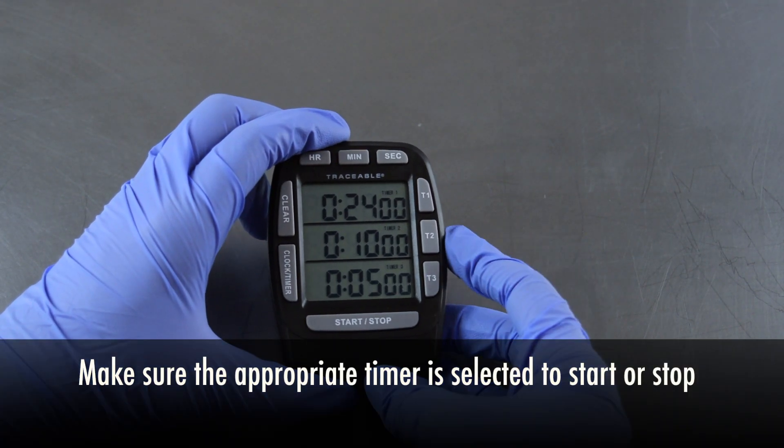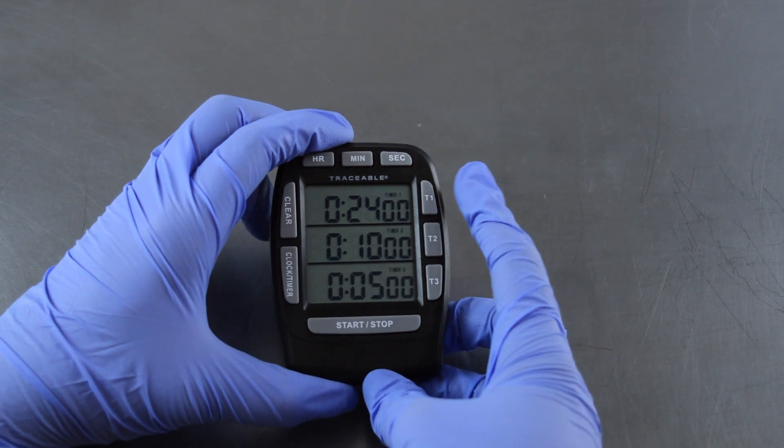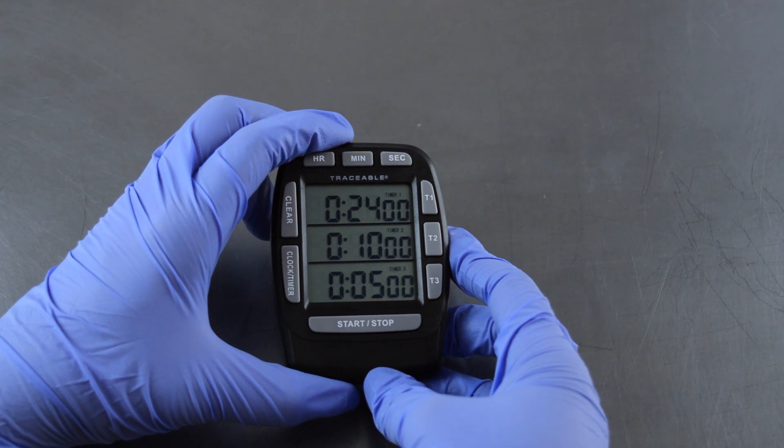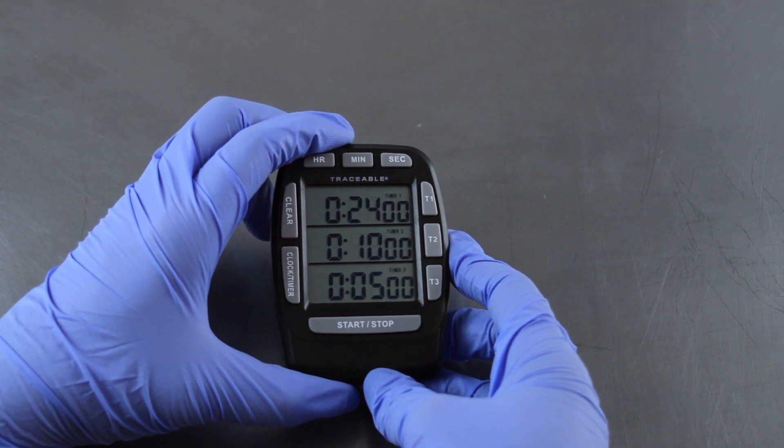Make sure the appropriate timer is selected when starting or stopping the timer. When sampling for particles, water, and oil, you can program all three timer channels before you start sampling.